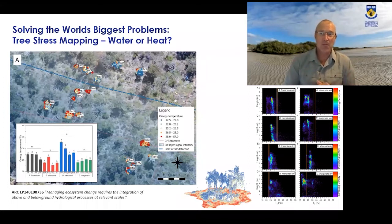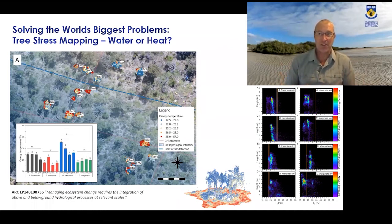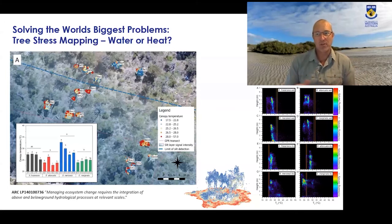Using a drone with a thermal camera, we can develop complex thermal maps of ecosystems. Here we've mapped different tree species — eucalypts, banksias, and others — looking at their temperature and how they respond to water stress and drought stress. This addresses the fundamentally critical question of, in a globally warming climate and within this threatened ecosystem, what drives decline: hot events, water stress, or a combination? The scale at which drone data helps us answer this has changed things dramatically.